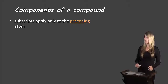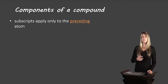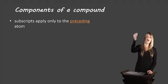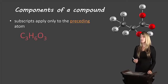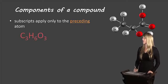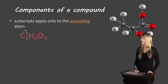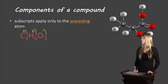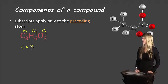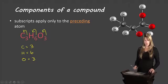Let's look at our first rule: subscripts apply only to the preceding atom — meaning the atom that comes before the subscript. Let's take a look at an example: C3H6O3. This three only applies to the preceding atom carbon, this six only applies to the H, and this three only applies to the oxygen. So we have three carbons, six hydrogens, and three oxygens.